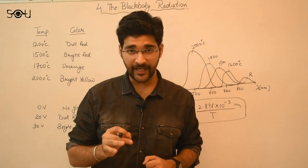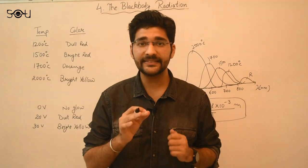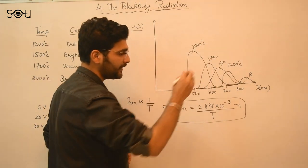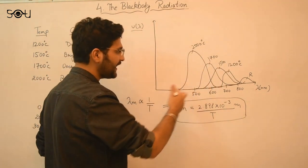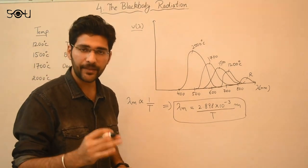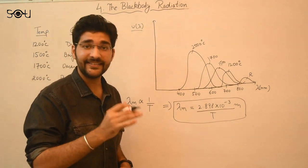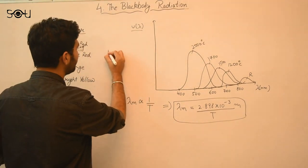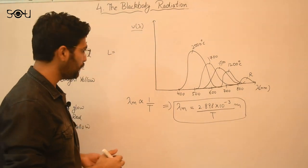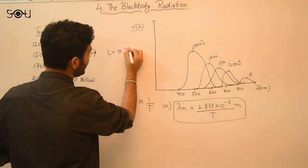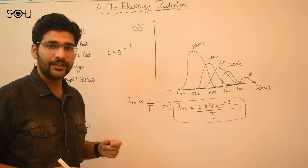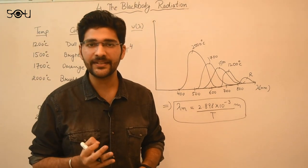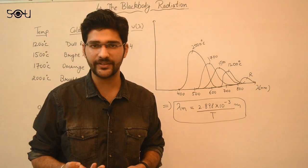Another law derived during this time from experiments was Stefan's law. Stefan's law says that the total luminosity — the total energy emitted from a black body per unit time per unit area — is directly proportional to the fourth power of temperature: L = σT⁴, where σ is a constant. This law helped us calculate the surface temperature of the sun for the first time, at around 6,000 degrees Celsius.